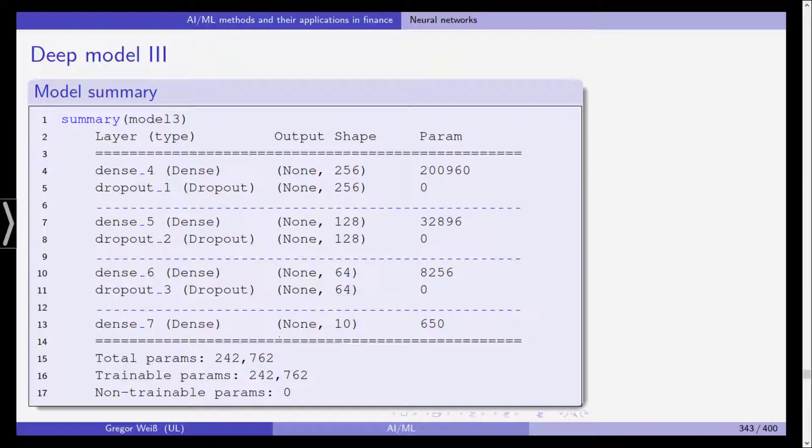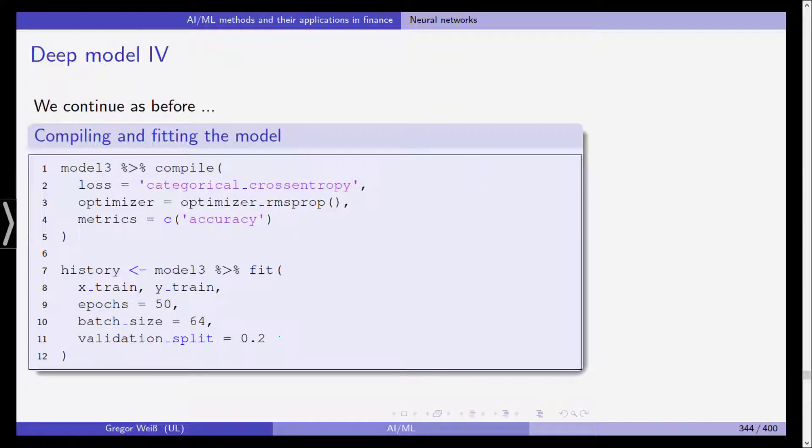Actually with the multi-layer perceptron we now have 243,000 parameters. All of these are trainable and as you can see interestingly in comparison to the single layer perceptron from before, the number of parameters doesn't increase that extremely when adding a second and a third hidden layer. So we move from 204 to 243,000 parameters.